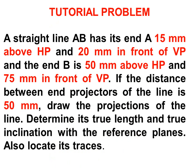A straight line AB has its end A 15 mm above HP and 20 mm in front of VP, and the end B is 50 mm above HP and 75 mm in front of VP. If the distance between end projectors of the line is 50 mm,